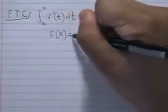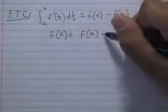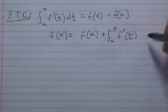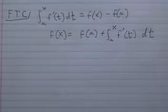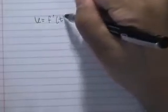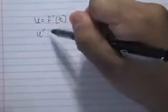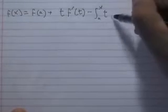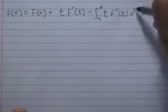Some algebra shows that f of x equals f of a plus the integral from a to x of f prime of t dt. If we let u equal f prime of t and dv equal dt, we can use integration by parts to show that f of x is equal to f of a plus t times f prime of t minus the integral from a to x of t times f double prime dt.